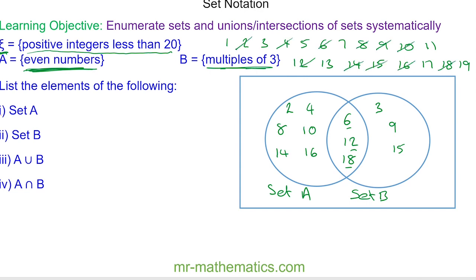Now our numbers that remain in our universal set which we haven't counted, these go outside the union, which are 1, 5, 7, 11, 13, 17, and 19.